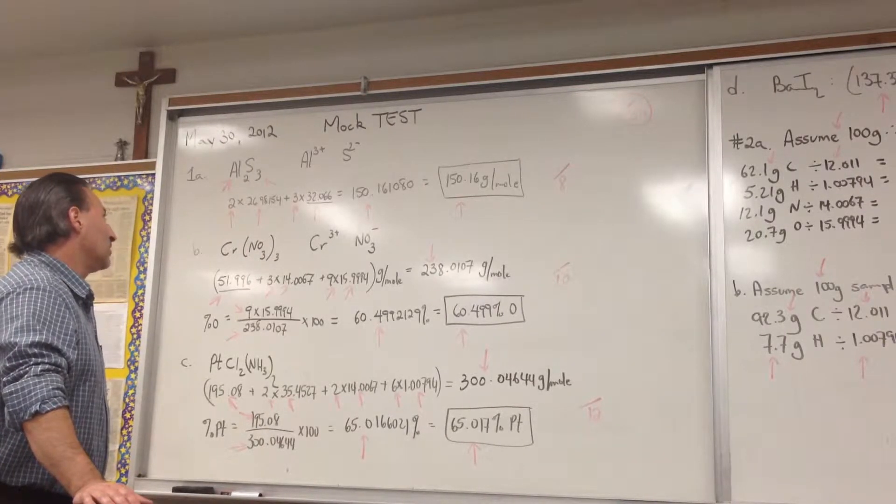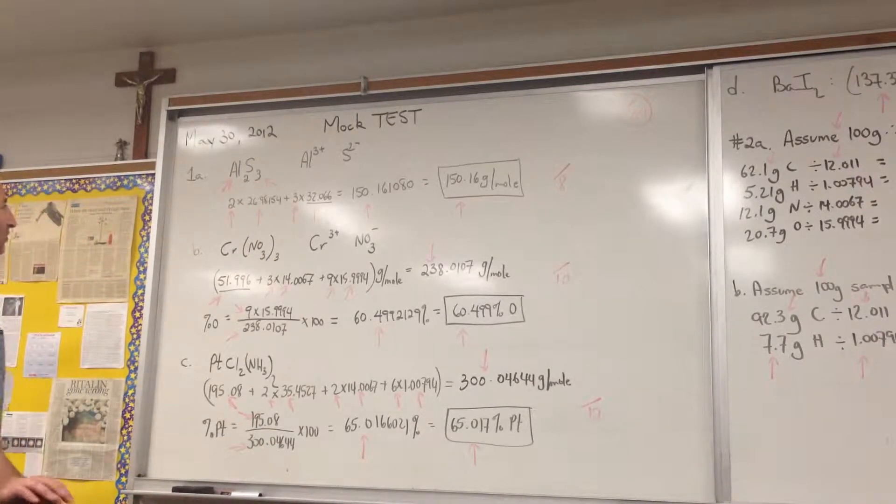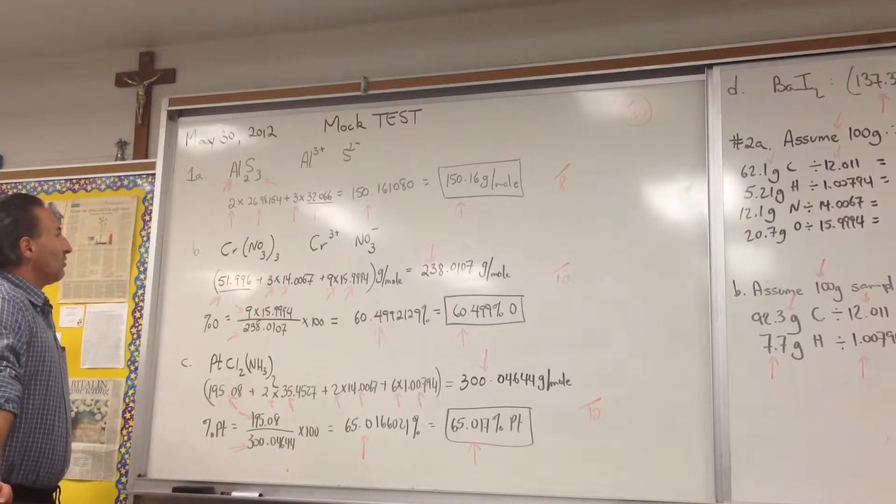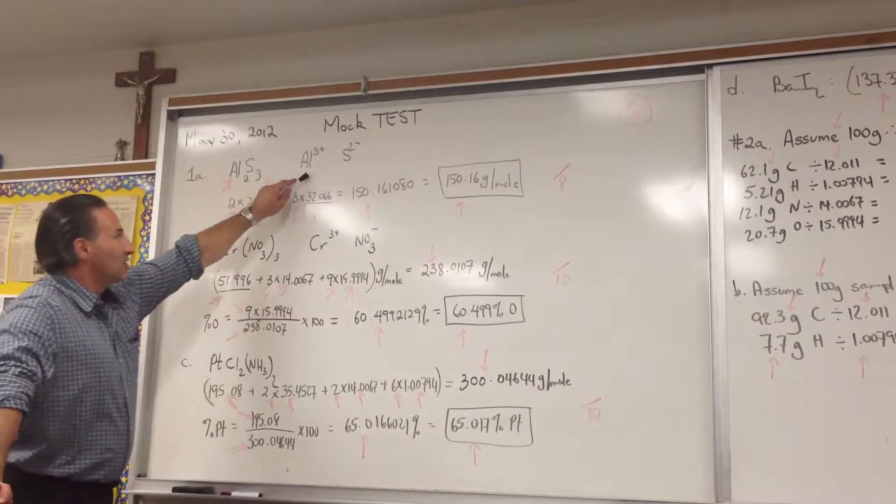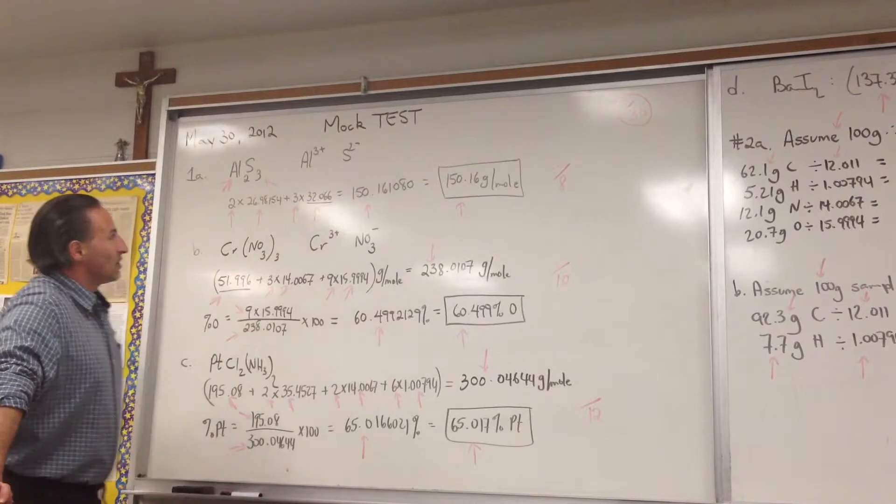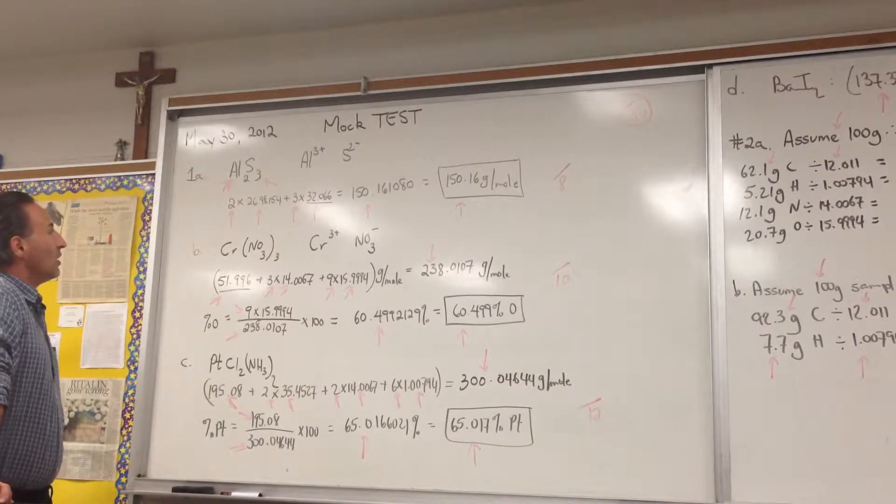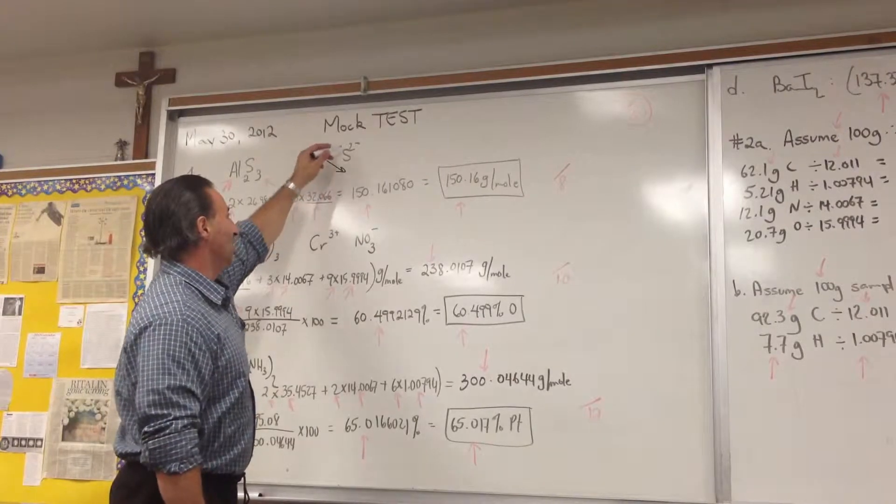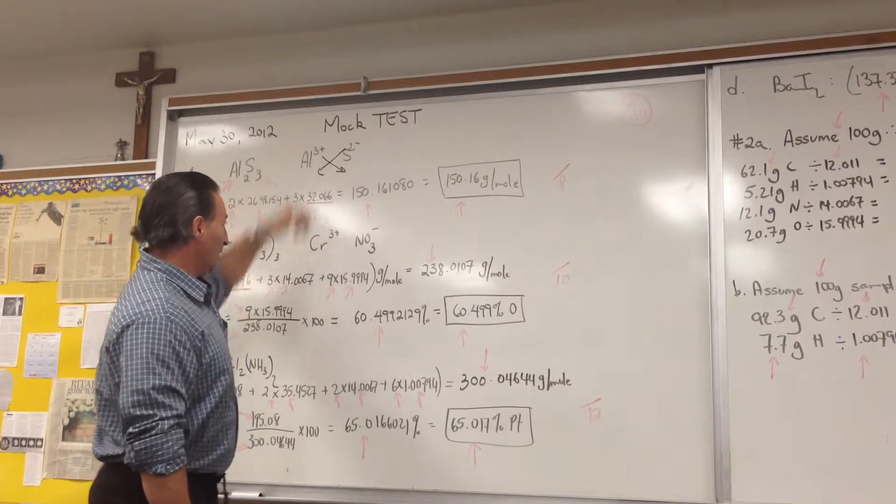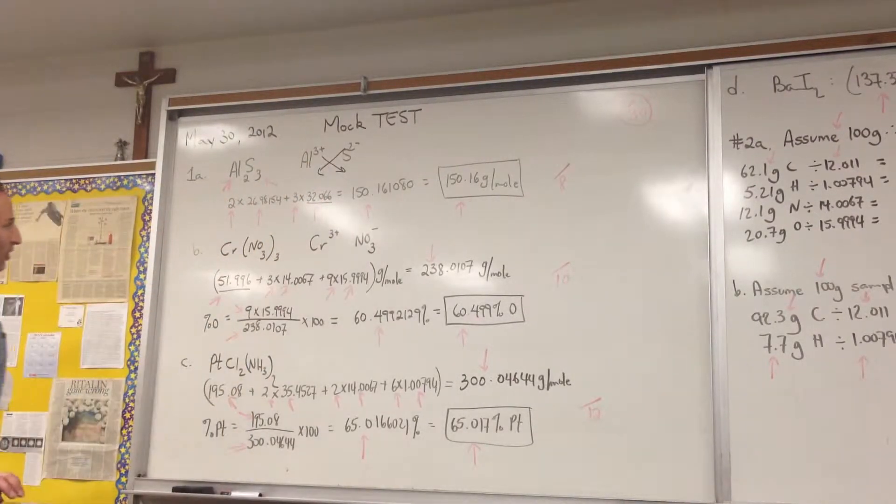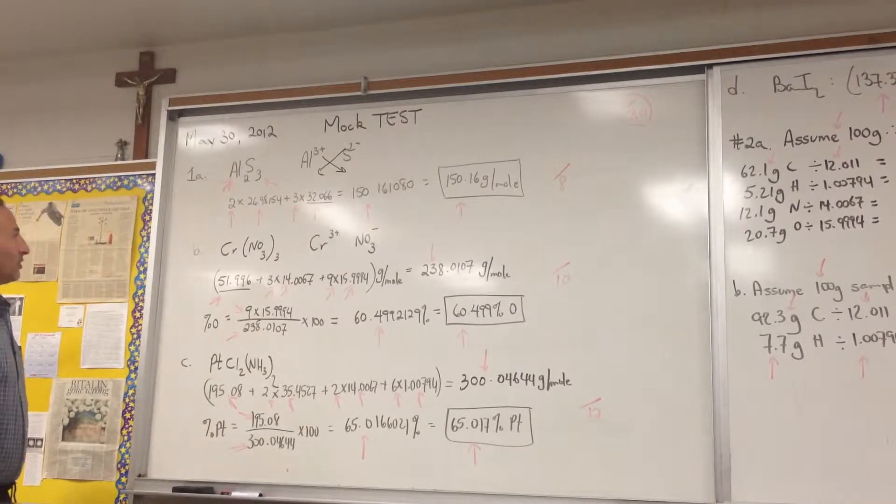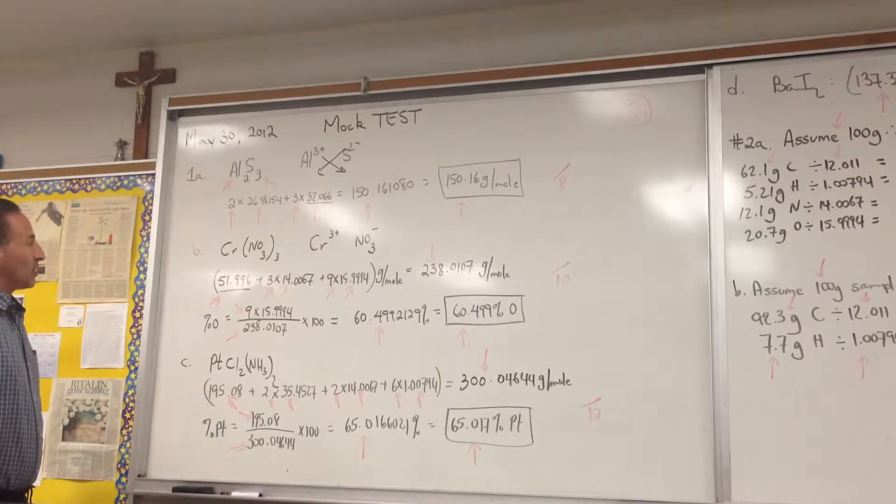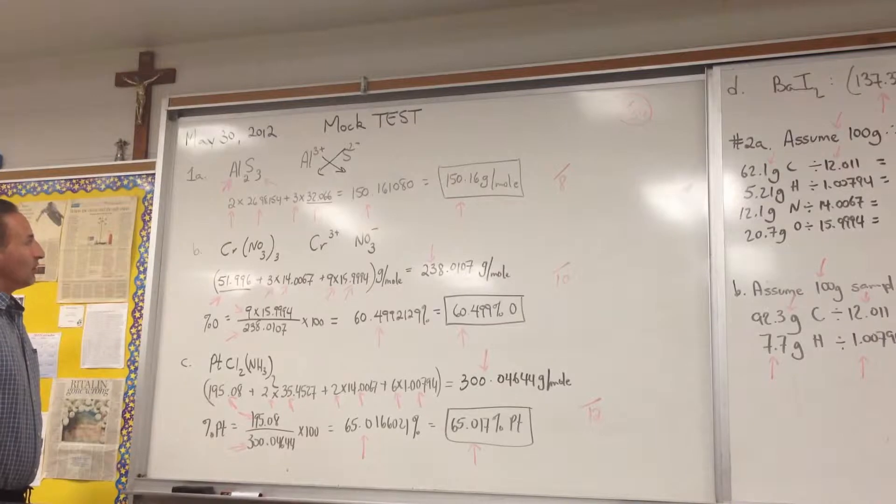In the first question we're asked to find the molar mass of aluminum sulfide. Aluminum sulfide is composed of aluminum with a charge of plus three, and sulfide which is a charge of minus two. When you combine them, one of the tricks they recommend is you do a criss-cross.